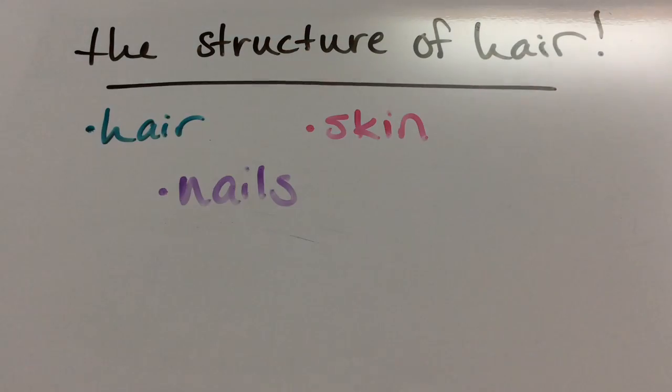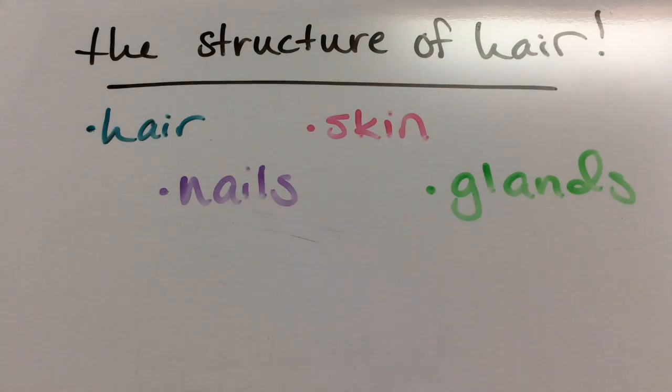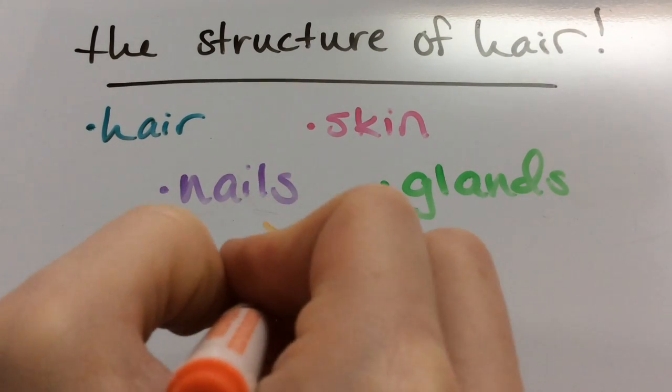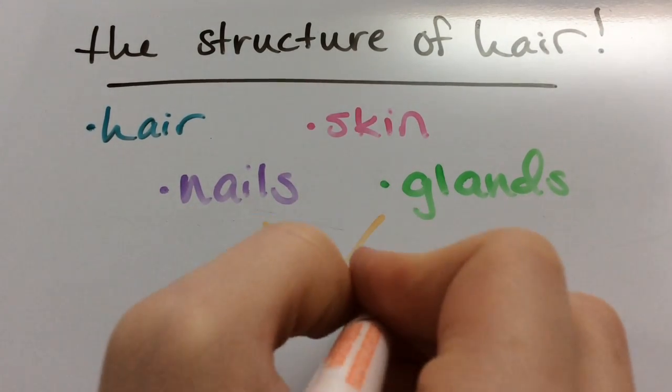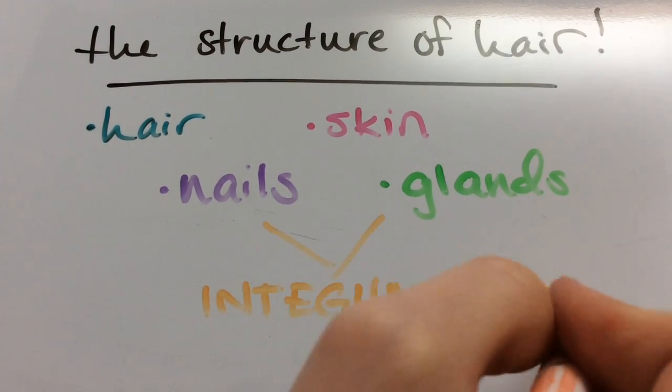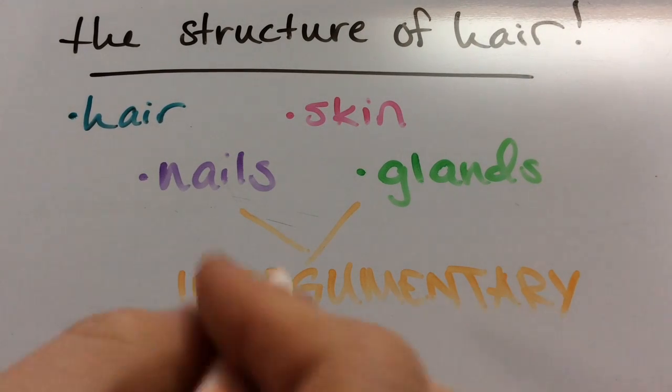What is encompassed in cosmetology is hair, skin, nails, and glands. It's all part of the integumentary system - I do trip up on that word. The integumentary system protects your body from moisture loss and abrasion, so it's a really important part of the human body.